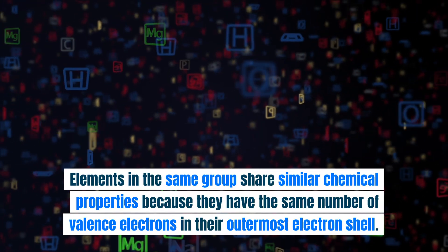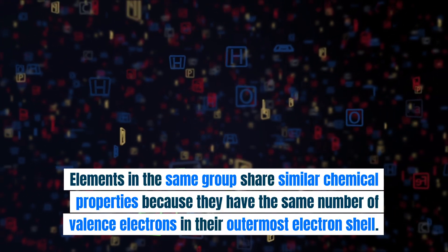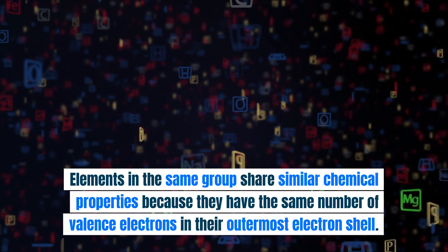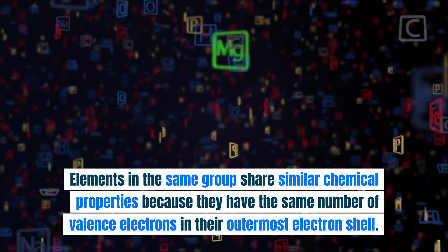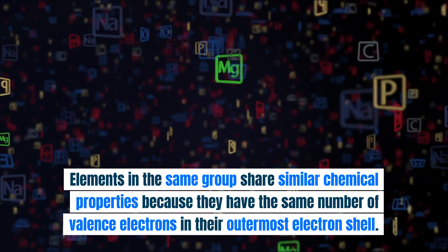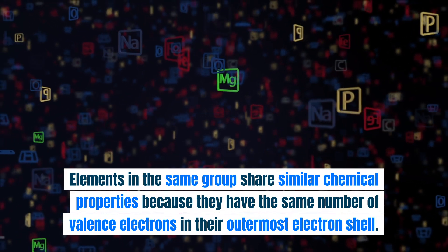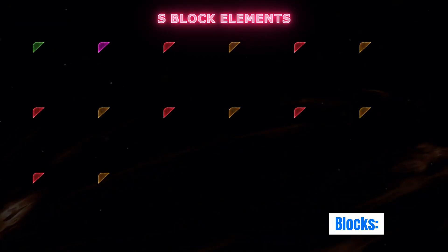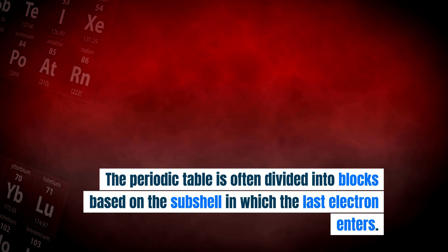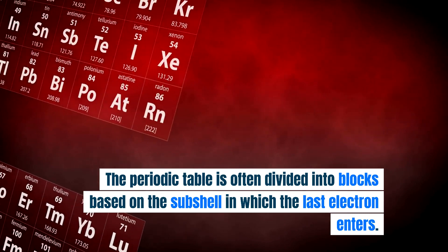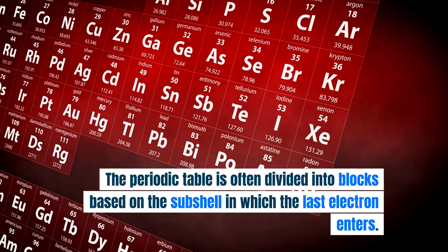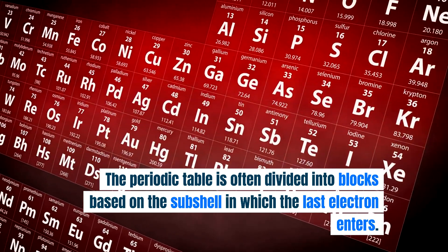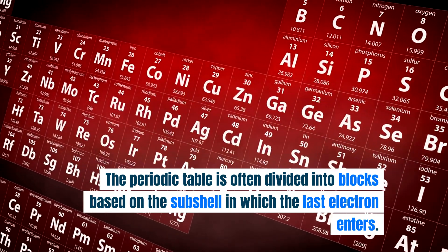Elements in the same group share similar chemical properties because they have the same number of valence electrons in their outermost electron shell. Blocks: the periodic table is often divided into blocks based on the subshell in which the last electron enters.